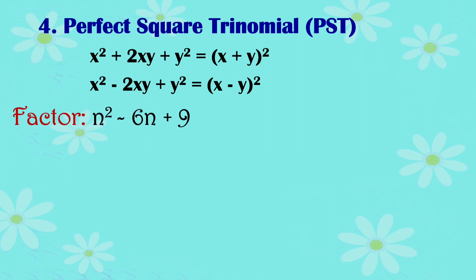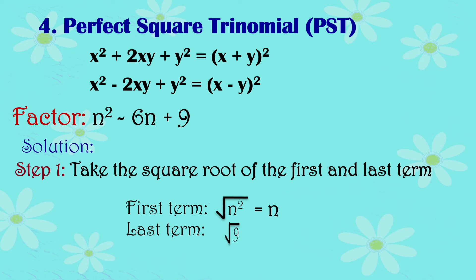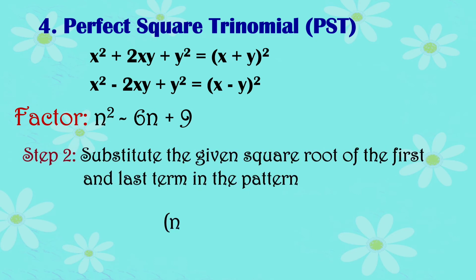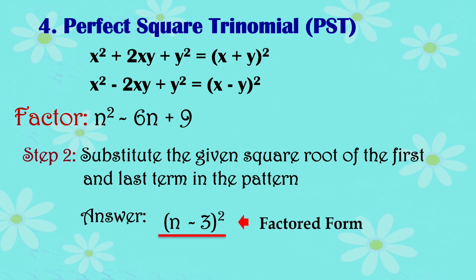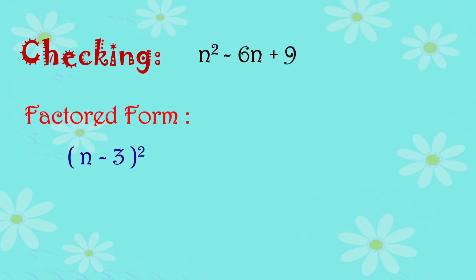Now factor n squared minus 6n plus 9. The middle term is negative, so we use the pattern quantity x minus y raised to 2. Take the square root of the first and last terms, then substitute into the pattern. Since the middle term is negative, use a negative sign: quantity n minus 3 raised to 2. Checking using the shortcut confirms the answer.